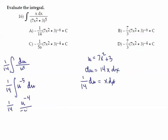And then plus c gives us, that's negative one over 56u, which would be 7x squared plus 3 to the negative fourth power plus c.